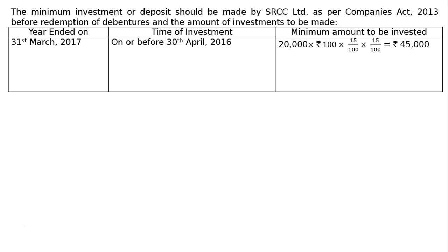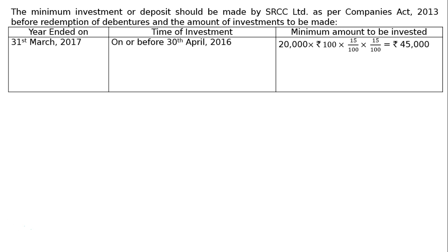The first entry is for year ended 31st March 2017. The investment is to be made on or before 30th April 2016. The amount is 20,000 debentures of Rs. 100 each, and 15% of this is to be invested, which comes to Rs. 45,000.